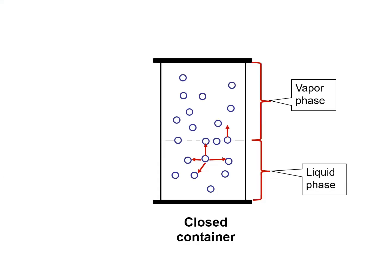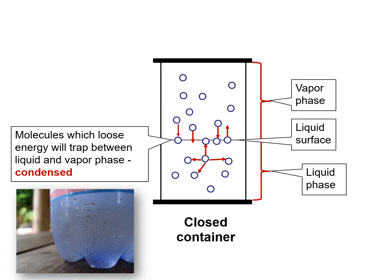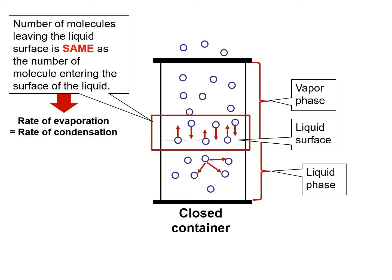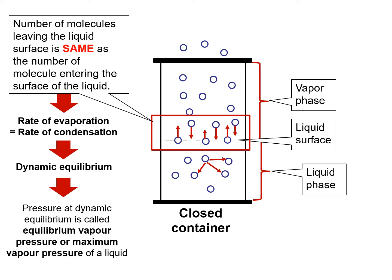As discussed previously, molecules in the vapor phase will collide with each other, the liquid surface, and the wall of the container. During the collision, some molecules may lose their energy. These molecules will become trapped among the liquid molecules and hence condense — this is the process called condensation. When the number of molecules leaving the liquid surface is the same as the number of molecules entering the liquid surface, the rate of evaporation is equal to the rate of condensation. This state is called dynamic equilibrium. The vapor pressure at dynamic equilibrium is called equilibrium vapor pressure, or the maximum vapor pressure of a liquid.